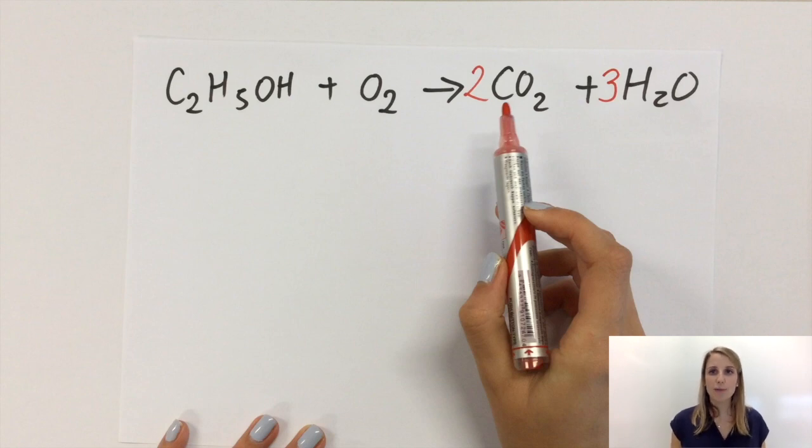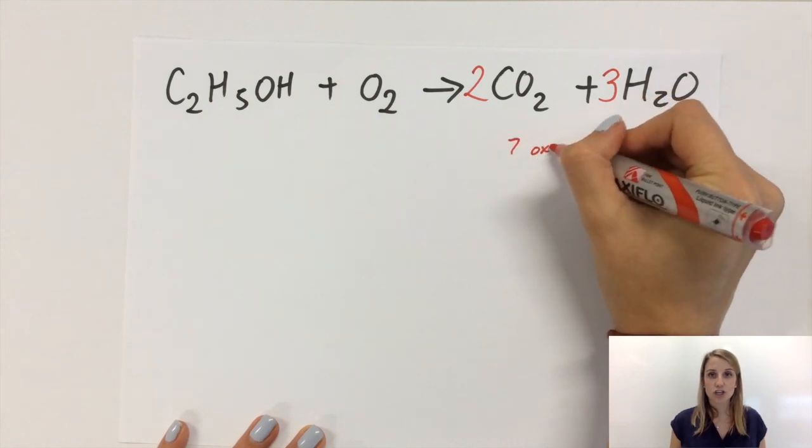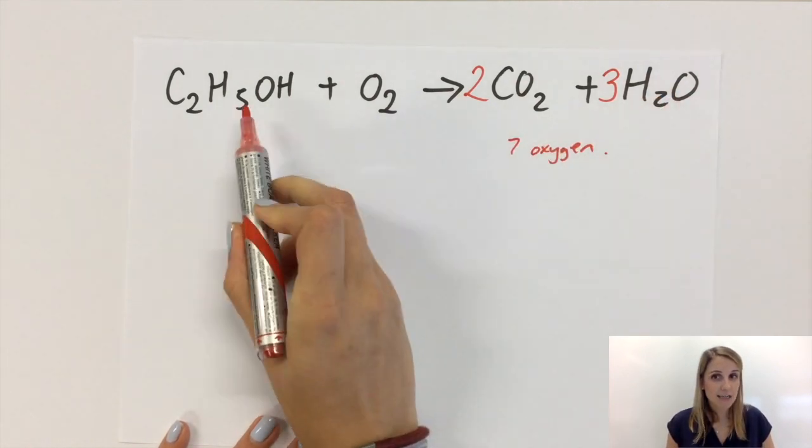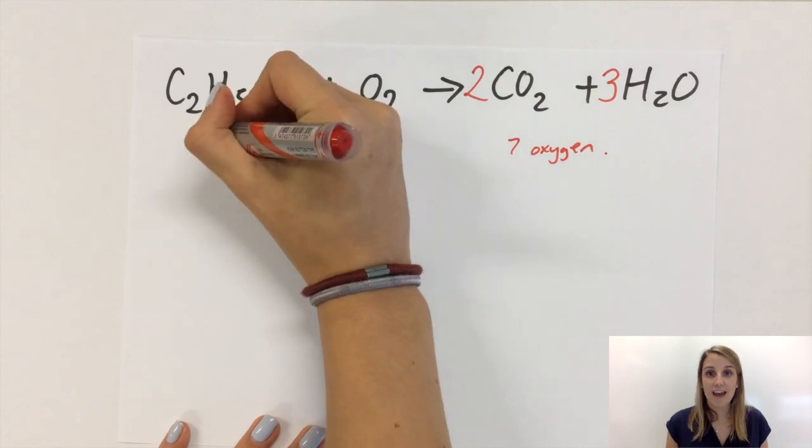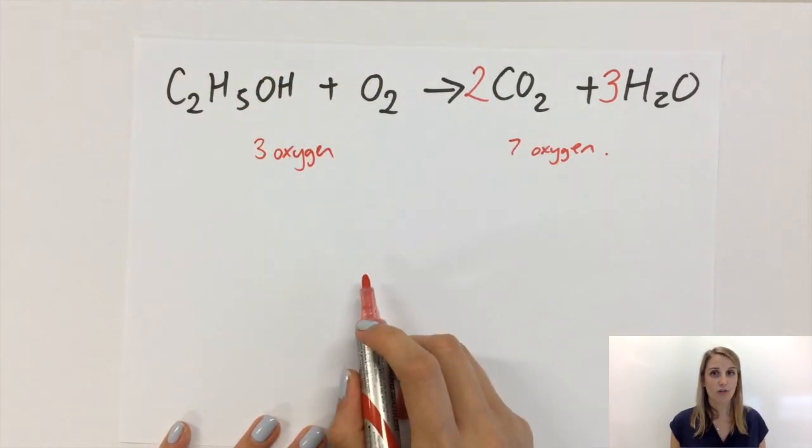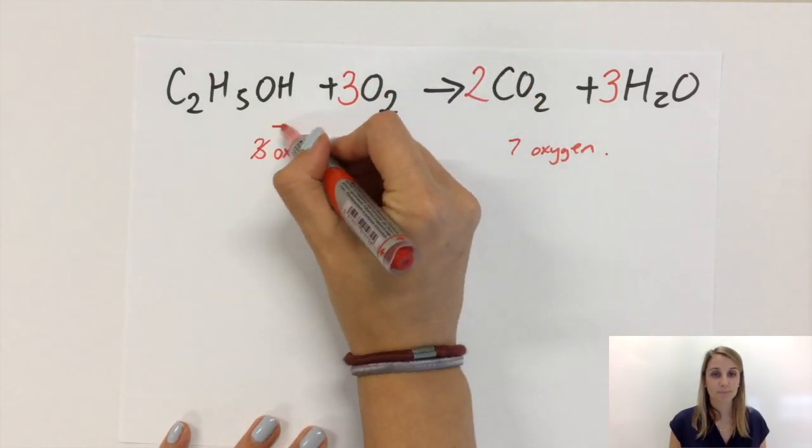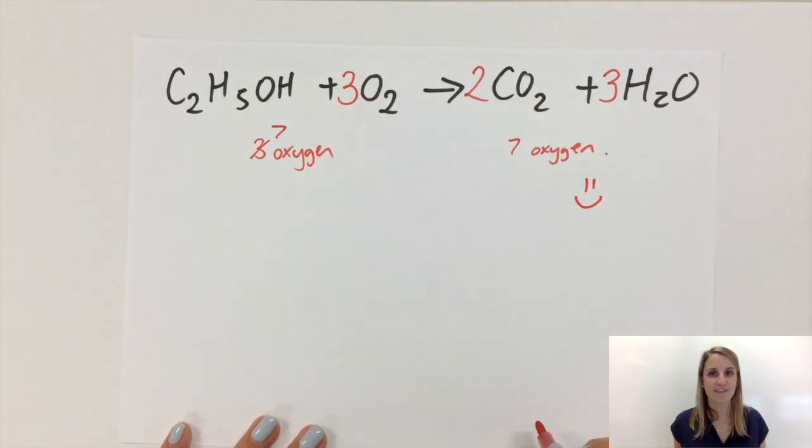And now I'm going to sort out the oxygen. So currently there's seven oxygens on the right hand side but only three on the left hand side. So to balance that out and to make it seven on the left I need three O2's. Overall that balances out perfectly.